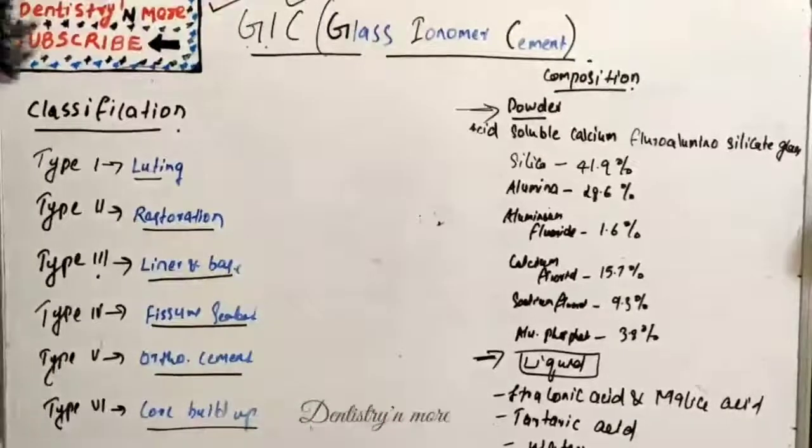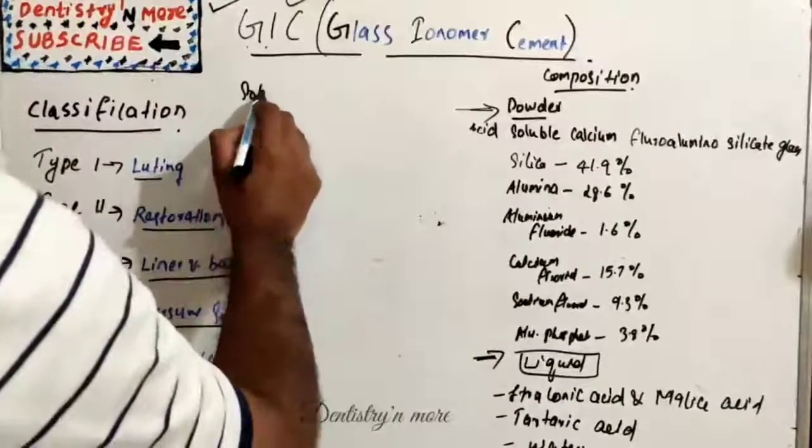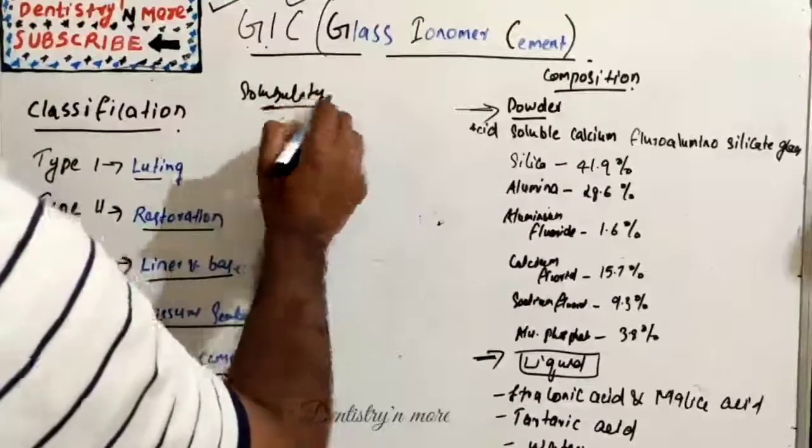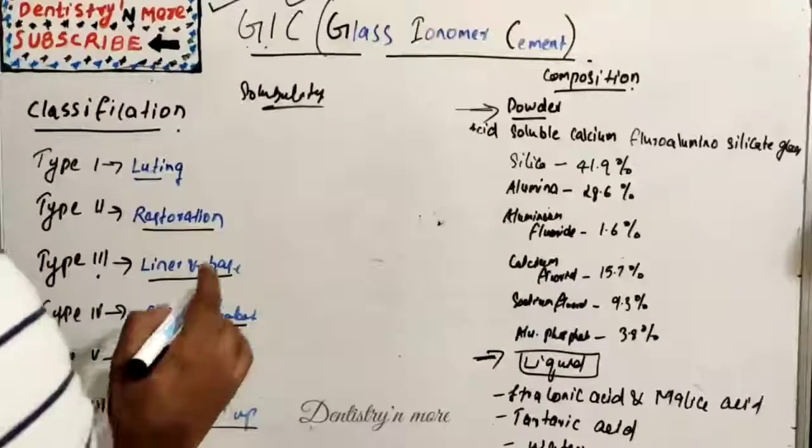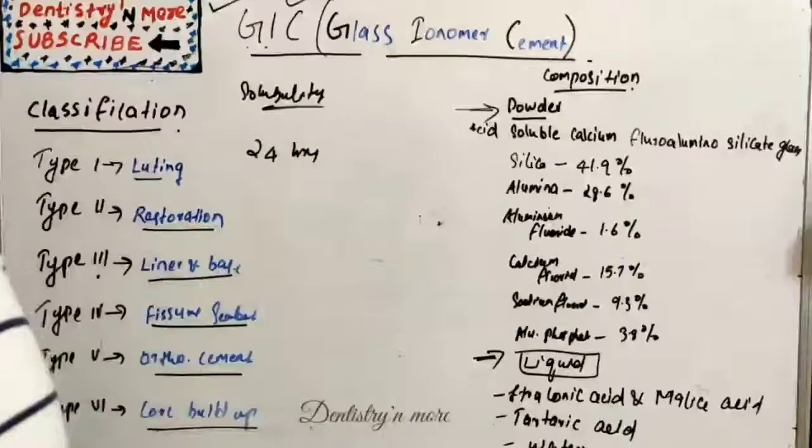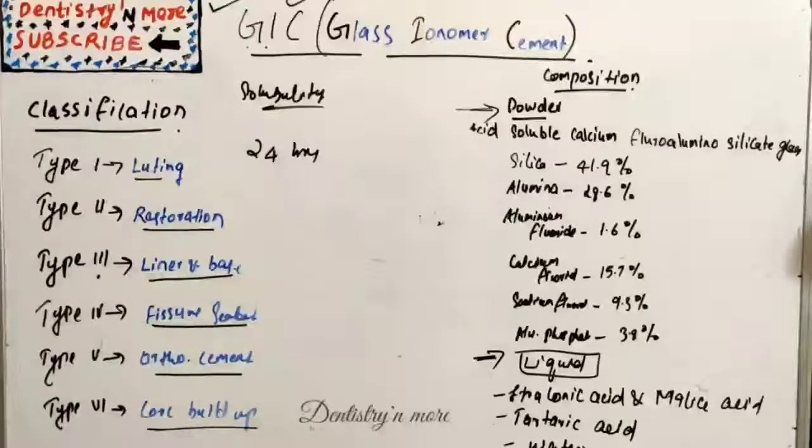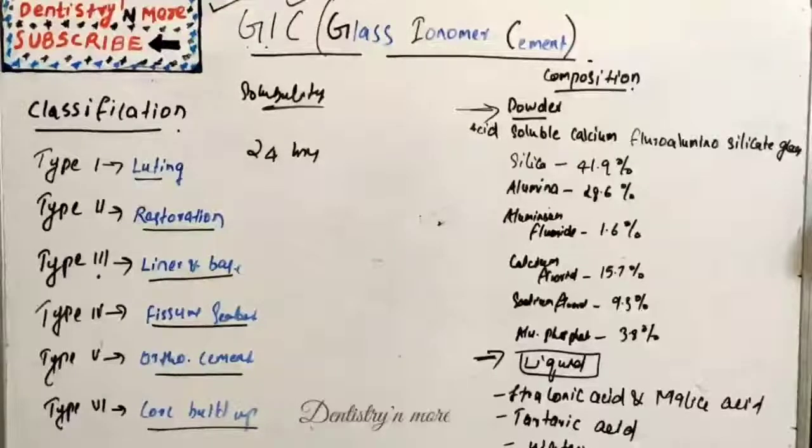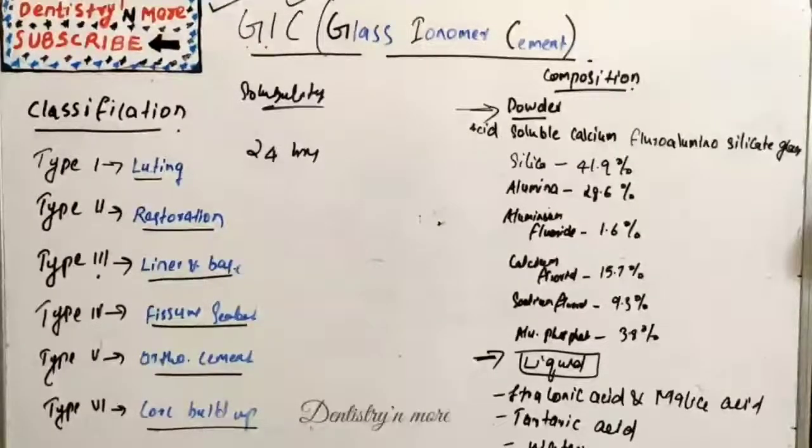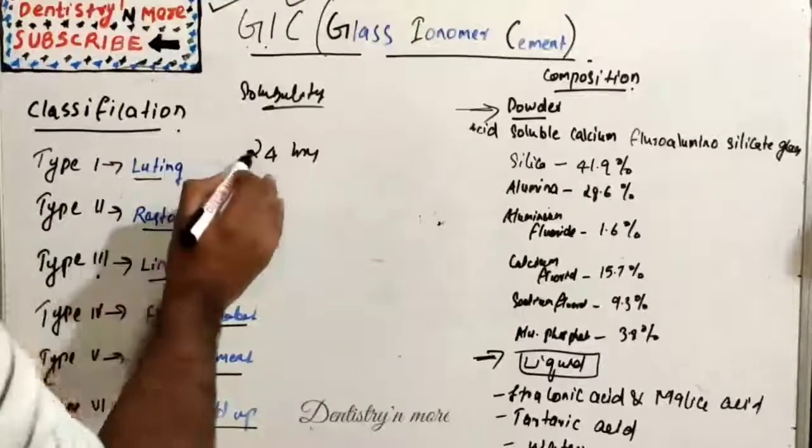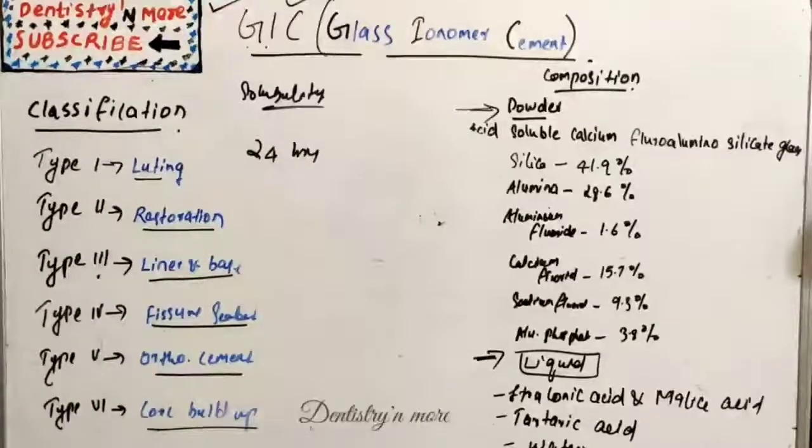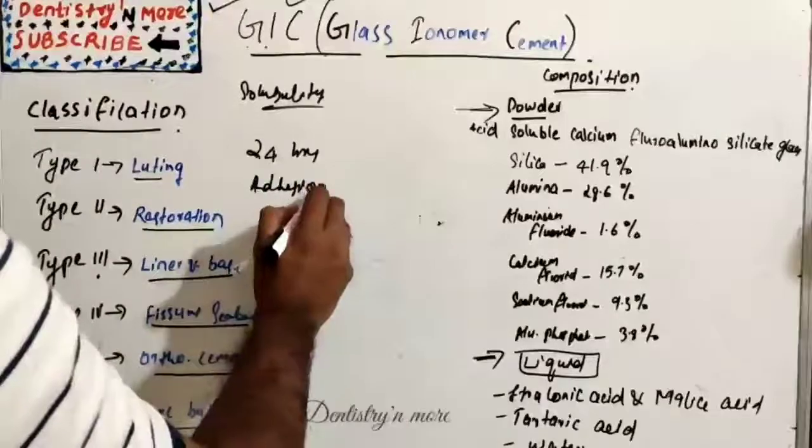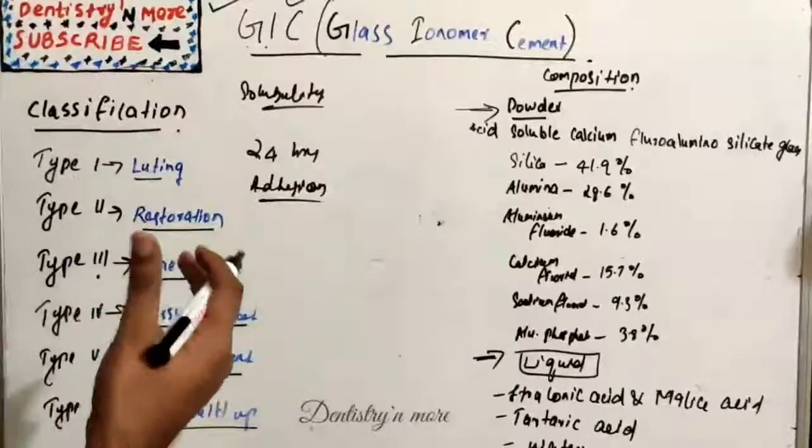Regarding solubility and disintegration: initial solubility is high due to the leaching of intermediate products. The complete setting reaction takes place in 24 hours, so cement should be protected from saliva during this period. We used to ask the patients who get this restoration done to avoid contact of water in that particular area. To prevent that, we used to apply vaseline.